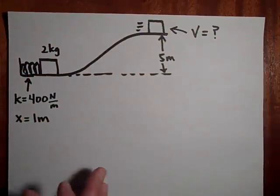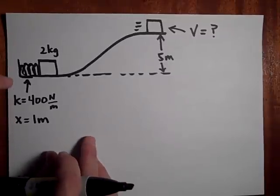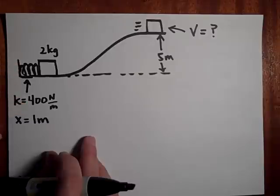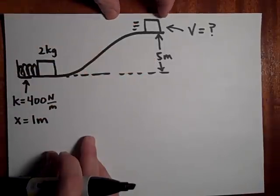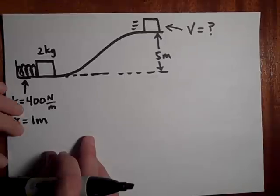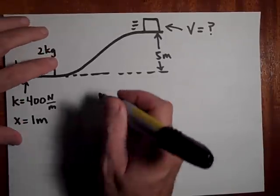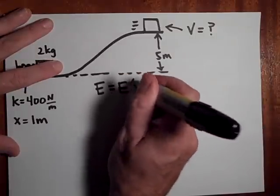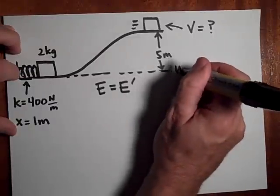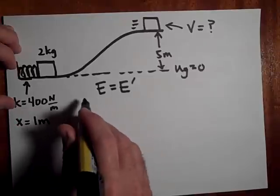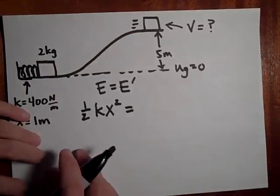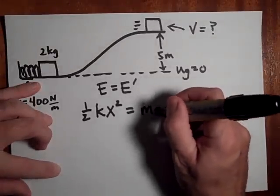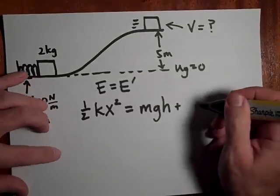Okay, the next one. We'll do a little energy conservation problem. You compress this spring one meter. The k value for the spring is 400 Newtons per meter. It's a 2 kilogram crate, and it's going to shoot this up the hill. The hill's 5 meters tall, and I'd like to know what the speed of this box will be at the top of the hill. Go ahead and pause. Okay, so E equals E prime. The energies at the bottom - let's call this our Ug equals zero line - it just has one half kx squared. However, at the top it's got two energies: some height so it's got mgh, but it's also got a little velocity, so one half mv squared.